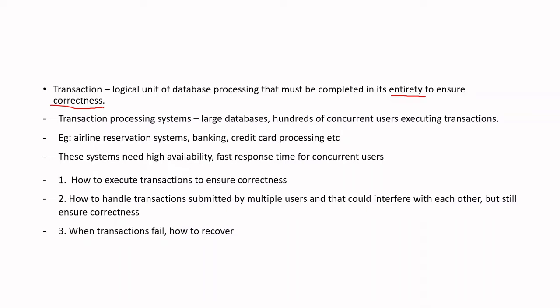We will be talking about transaction processing systems — the more common term is OLTP, or Online Transaction Processing systems — which involves multiple transactions. It involves hundreds of concurrent users executing at the same time. Examples are airline reservation systems or banking systems.